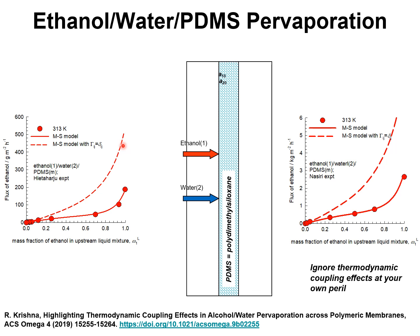The thermodynamic coupling effect serves to lower the flux of ethanol, while the influence on the flux of water is relatively lower. The key message from the modeling exercise for ethanol-water pervaporation is: ignore thermodynamic coupling effects at your own peril. Details are available in my paper, which also analyzes pervaporation across hydrophilic membranes, but the message remains the same. The one-two friction term in the Maxwell-Stefan equations and thermodynamic coupling effects are both important to include when modeling alcohol-water pervaporation across polymer films.